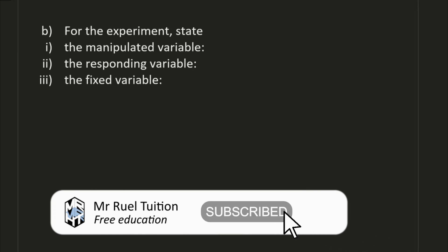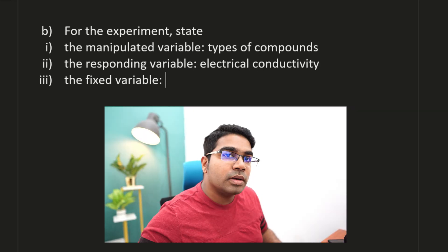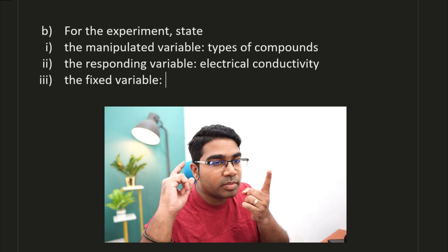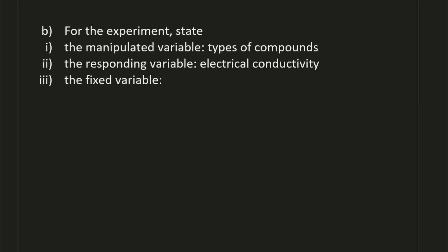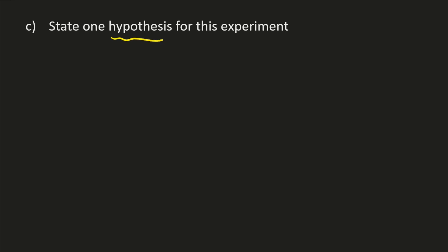The table is now done. The MV is the types of compounds, and the responding variable is the electrical conductivity. The fixed variable — what we did not change while conducting the experiment — is the physical states of the ionic compound and covalent compound being tested. Next, state one hypothesis for this experiment.